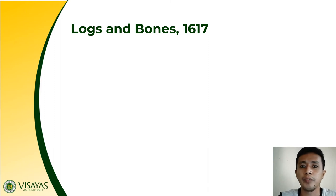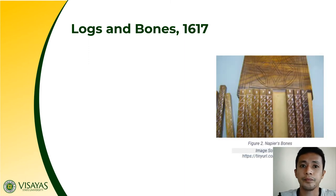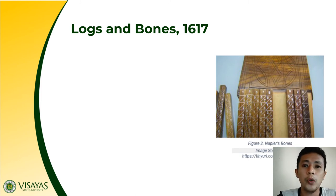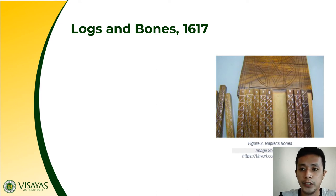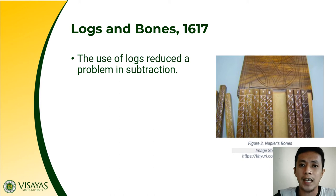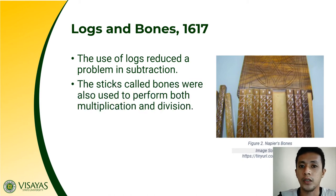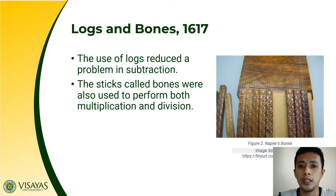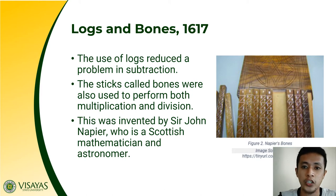Another example of a manual mechanical device is what we call Logs and Bones, developed around the year 1617. It was developed by John Napier, also known as Napier's Bones. The use of logs reduced problems in subtraction, and the sticks called bones were used to perform both multiplication and division. This was invented by Sir John Napier, a Scottish mathematician and astronomer.